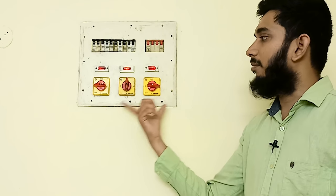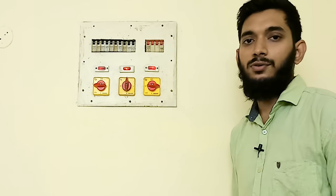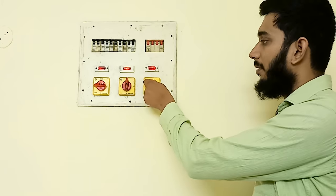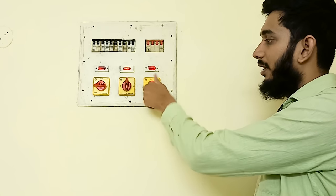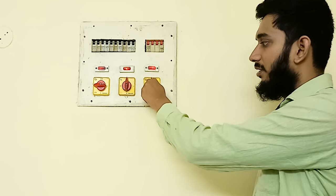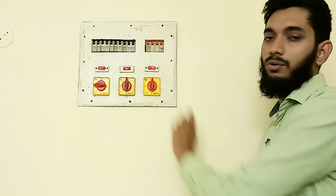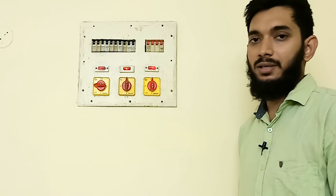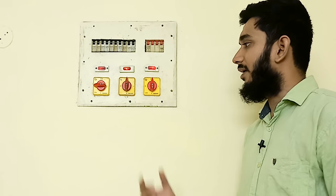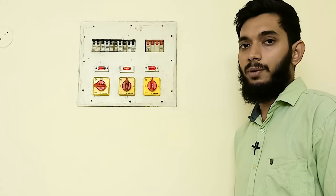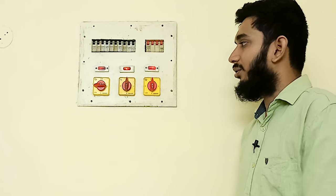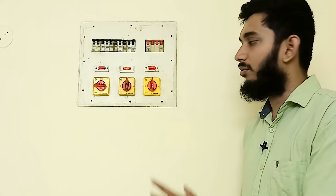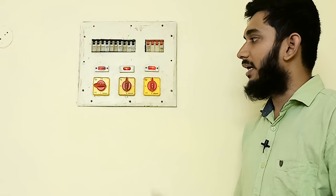In 3 ways, you can use 3 selectors. We can use a phase connection like this. If you use 3 switches, you can use the power cut. If you use 3 switches, you can use the current.